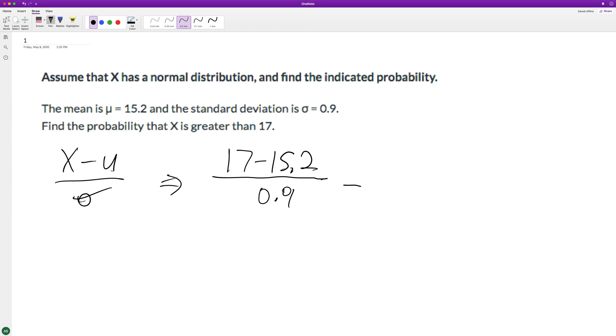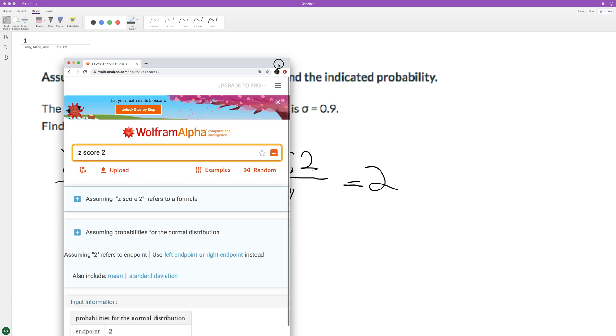So that's, oh, that's nice. That's equal to 2. So then we do a Z-table of 2, Z-score 2.